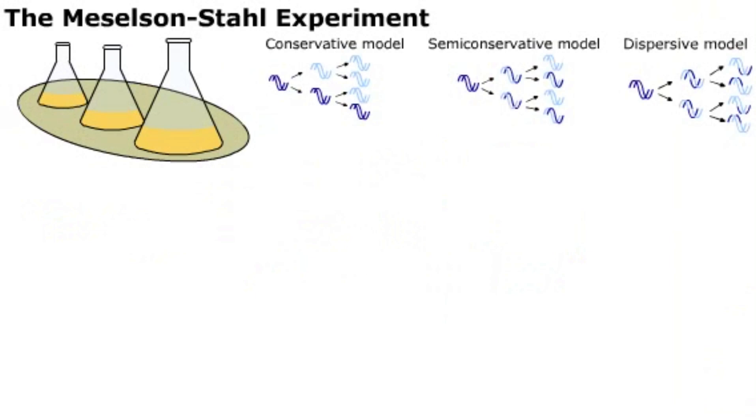In 1953, American biologists Matthew Meselson and Franklin Stahl devised an experiment to determine which replication model was correct.